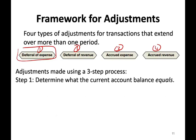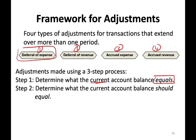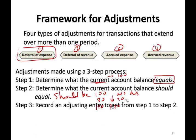How do we prepare adjustments? The first thing is: what is the current account balance that we are adjusting? Then step two: what should the account balance be. So if the current balance is 100 and it should be 100, no adjustment. If the current balance is 100 and it should be 80, reduce it by 20. If the current balance is 100 and it should be 120, increase it by 20. Take the difference between one and two, and that's your adjusting entry.